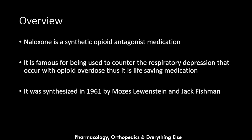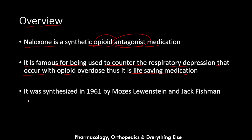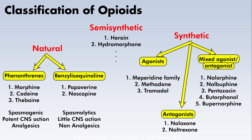Naloxone is a synthetic opioid antagonist medication. It binds to opioid receptors and antagonizes them, and it is famous for being used to counter the respiratory depression that occurs with opioid overdose. When a patient overdoses on opioids and develops respiratory depression, naloxone can reverse that, making it a life-saving medication. It was synthesized in 1961 by researchers Moses Lohenstein and Jack Fishburne.